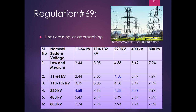Regulation 69 covers clearance between two conductors of different system voltages or different circuits. A simple table is provided. For example, if one tower carries 220 kV and another carries 400 kV, the distance between the two nearest conductors at the intersection point shall be 5.49 meter. Similarly, for 66 kV and 400 kV the clearance is again 5.49 meter.